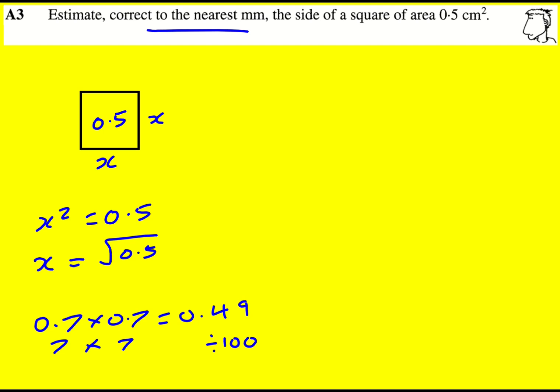So overall, the answer is going to be 0.7 centimeters. Oh wait, correct to the nearest millimeter is going to be 7 millimeters. You can see it's very close to 7 millimeters because it's not going to be 6 or 8.